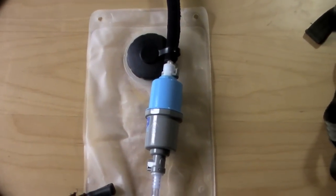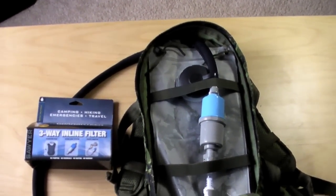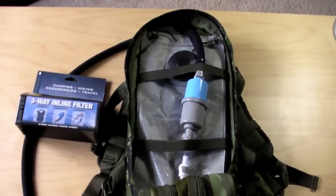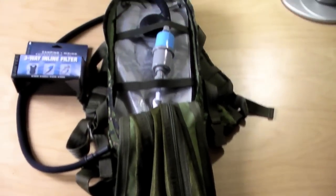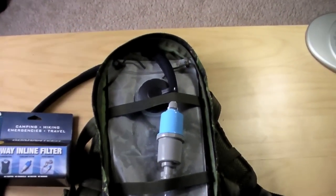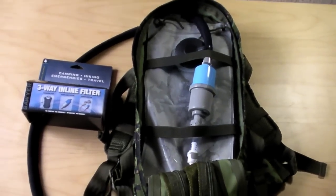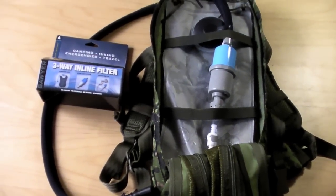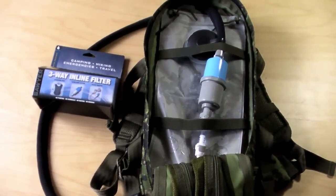Okay, so this is what it looks like completed in my water bladder. All I have to do is zip the front part of the water bladder closed and it is completely concealed within my water bladder bag, and I will have perfect clean drinking water.